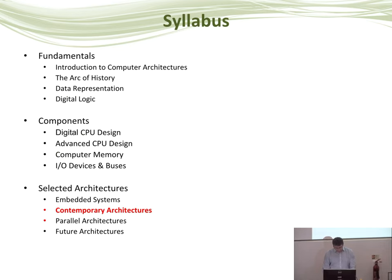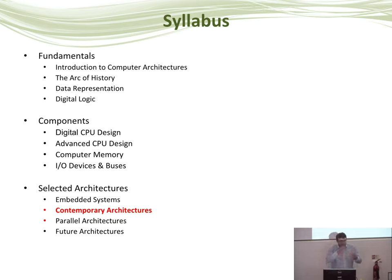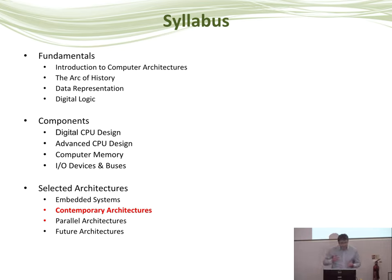Today we're going to talk about contemporary architectures — the kinds of architectures you might actually be using today, such as on your PC or on your mobile device. This is part of the third section of the module. We've covered all the relevant theory in the previous two, and now we're looking at how that theory gets applied in particular kinds of architectures you might actually encounter out in the wild.